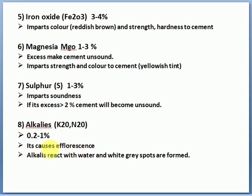Alkalis (K2O), 0.2 to 1% — must remain below 1%. Alkalis cause efflorescence — a very important term. Efflorescence means: when alkalis are present in excess in cement, and you use that cement in a structure, white/grey particles will appear on the surface, similar to salt deposits. This is because alkalis react with water and white-grey spots are formed. These eight chemicals represent the total functions of cement.